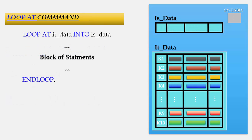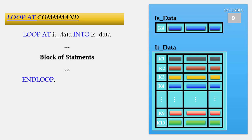The LOOP AT command is used when you want to perform certain operations on the complete table. The syntax is: LOOP AT internal_table INTO work_area is_data ... ENDLOOP. The work area, also known as the header line, starts empty. Initially the first record is moved to our internal structure and SY-TABIX is set to 1. Then the block of statements executes, then the second record is moved to the work area and SY-TABIX is set to 2, and so on. If there are 10 records, the block of statements will execute 10 times.